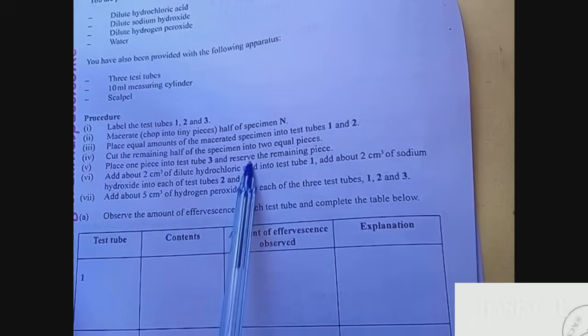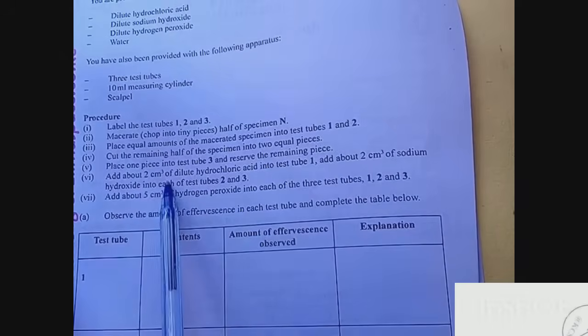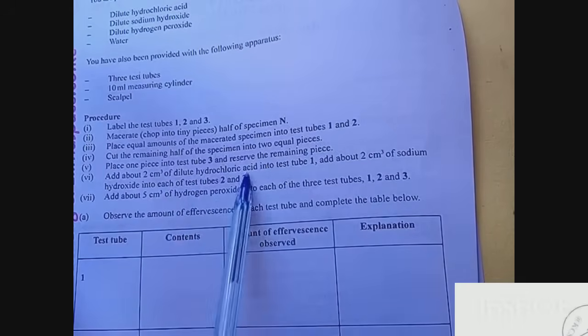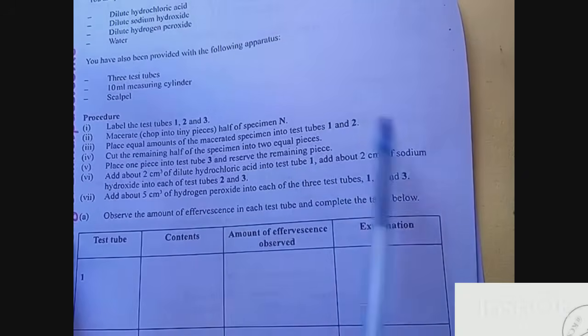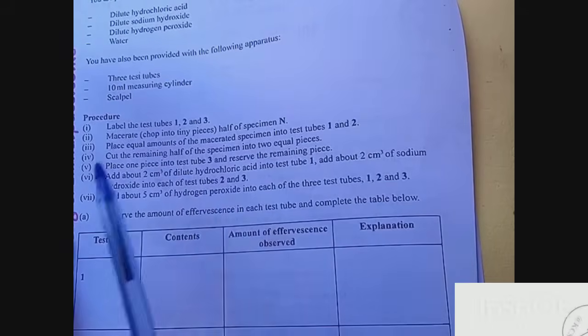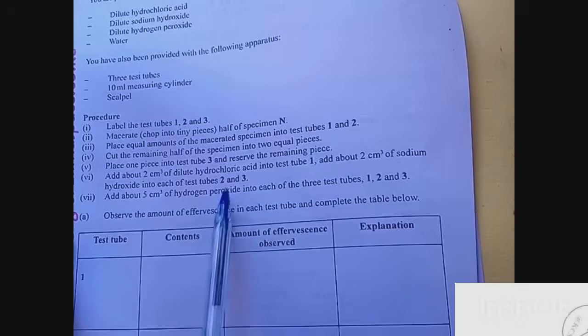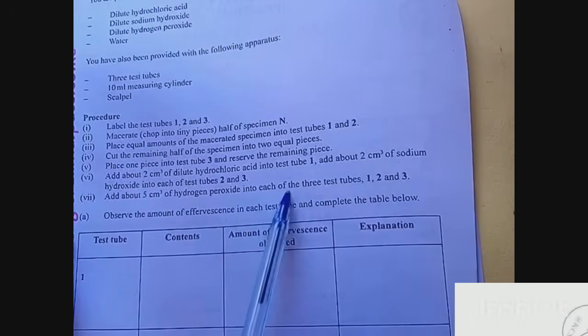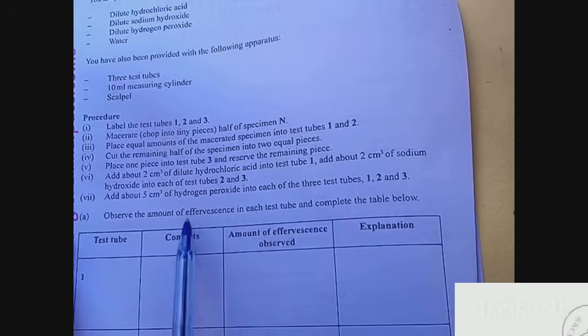Cut the remaining half of the specimen into two equal pieces. Place one into test tube three and reserve the remaining piece. Add about 2 cm³ of dilute hydrochloric acid into test tube one. Add about 2 cm³ of sodium hydroxide into each of test tubes two and three. Add about 5 cm³ of hydrogen peroxide into each of the three test tubes.